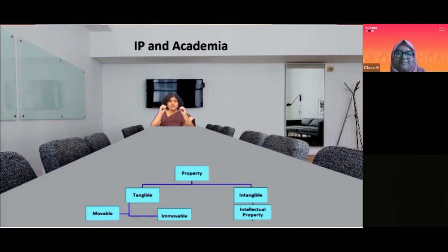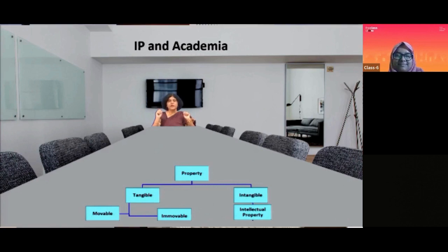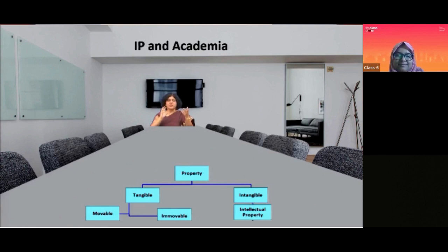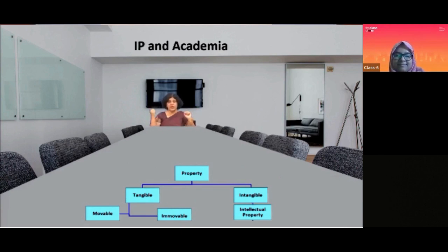Now, when we are talking about this particular property, or intellectual property, where exactly it comes from — as the name suggests, it is a part of property. Now, we know that when we are talking about property, it may be tangible property, it may be intangible property.